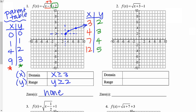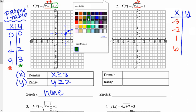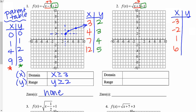Let's look at number 2: f(x) = √(x + 3) − 1. I'm going to create my new x-y chart. I have x plus 3 on the inside, meaning I'm going to subtract 3 — always do the opposite — from all of my original x values. 0 − 3 = −3, 1 − 3 = −2, 4 − 3 = 1, 9 − 3 = 6. And for y's, I'm subtracting 1: 0 − 1 = −1, 1 − 1 = 0, 2 − 1 = 1, 3 − 1 = 2.